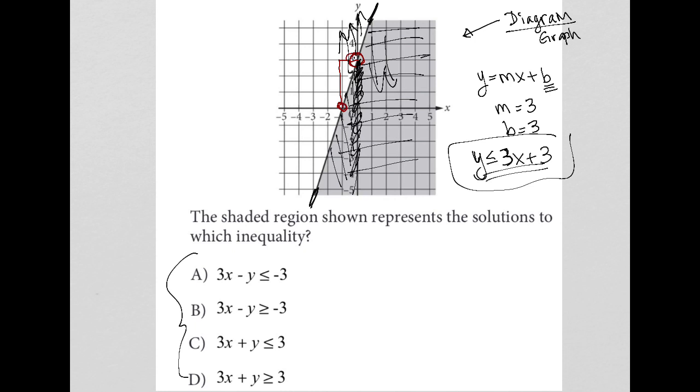I can do that with this first one by subtracting 3x from both sides, and I'd get negative y is less than or equal to negative 3x minus 3. Then I can multiply the whole thing by negative 1 to make it a positive y.